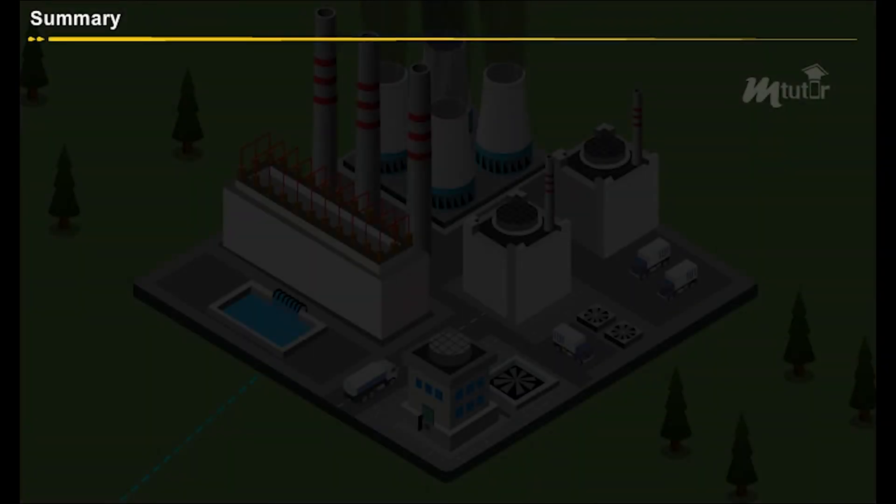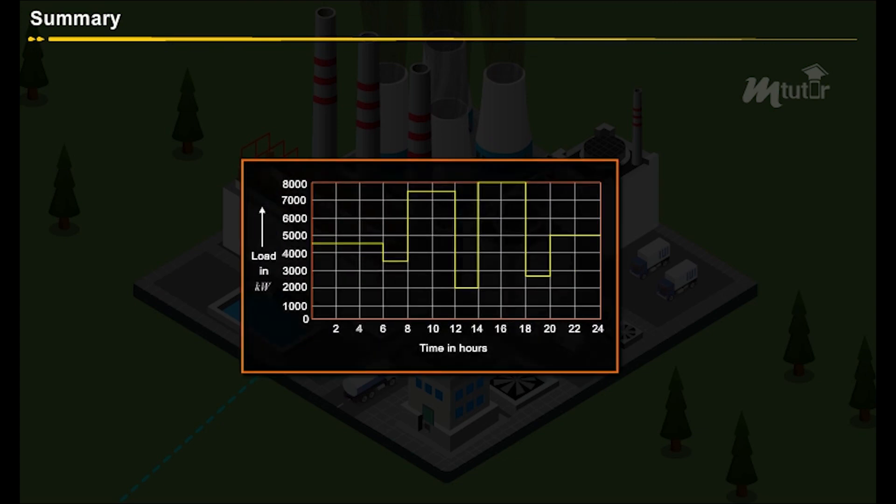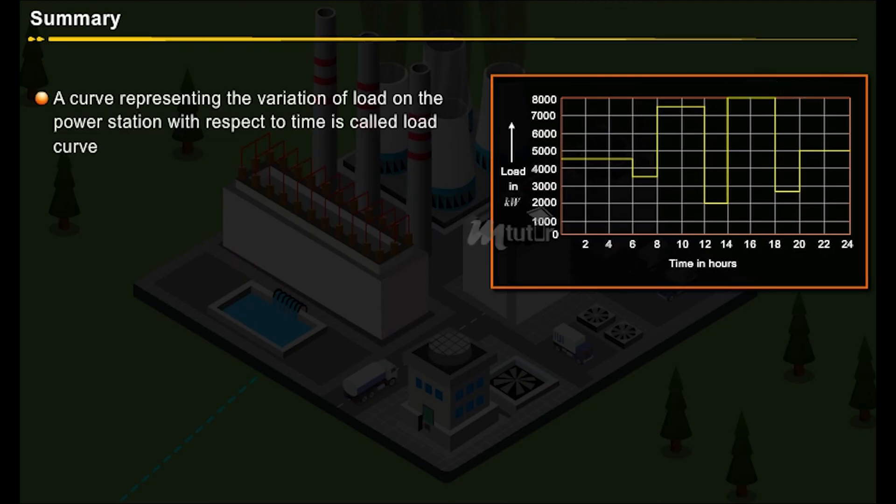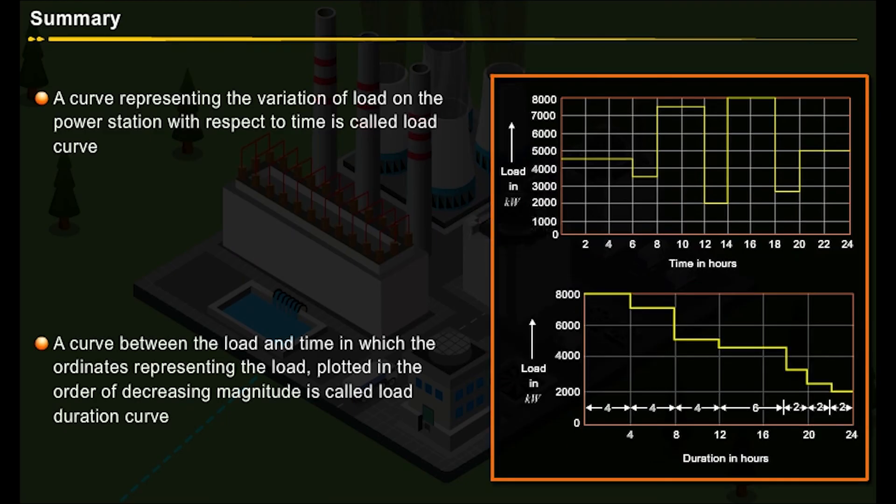Summary. This brings us to the end of the lesson. In this lesson, you have learned a curve representing the variation of load on the power station with respect to time is called load curve. A curve between the load and time in which the ordinates representing the load plotted in the order of decreasing magnitude is called load duration curve.